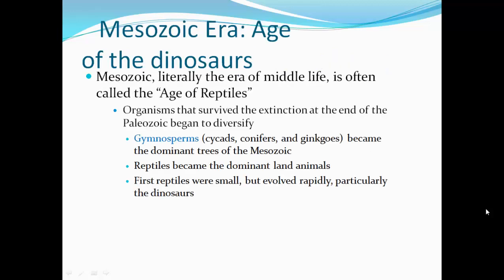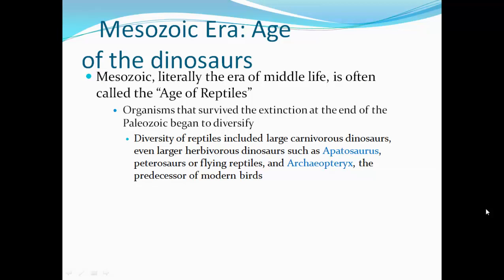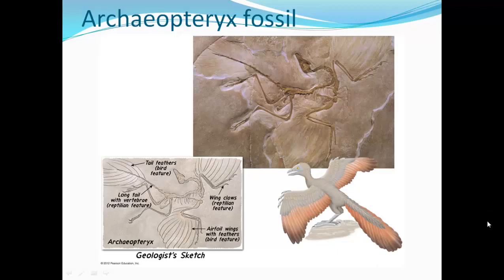The Mesozoic — literally the era of middle life — is often called the age of reptiles. Organisms that survived the extinction at the end of the Paleozoic began to diversify. Gymnosperms, cycads, conifers, and ginkgos became the dominant trees of the Mesozoic, and reptiles became the dominant land animals. The diversity of reptiles included large carnivorous dinosaurs, even larger herbivore dinosaurs such as the Apatosaurus, pterosaurs or flying reptiles, and Archaeopteryx — the predecessor of modern birds. Archaeopteryx had features found on both reptiles and birds: a long vertebrate tail and wing claws are reptilian features, while tail feathers and airfoil wings are bird features.